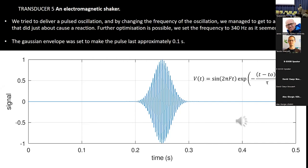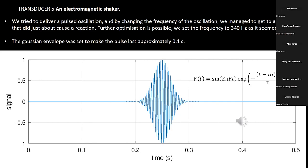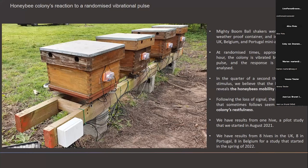This is the pulse we decided to use — we experimented with different pulses and this one just about provided a mild reaction from the bees. It's a 0.1-second-long stimulus. To operate it outdoors, the electromagnetic shakers were protected in little lunch boxes carefully glued by Adam to prevent weather damage.